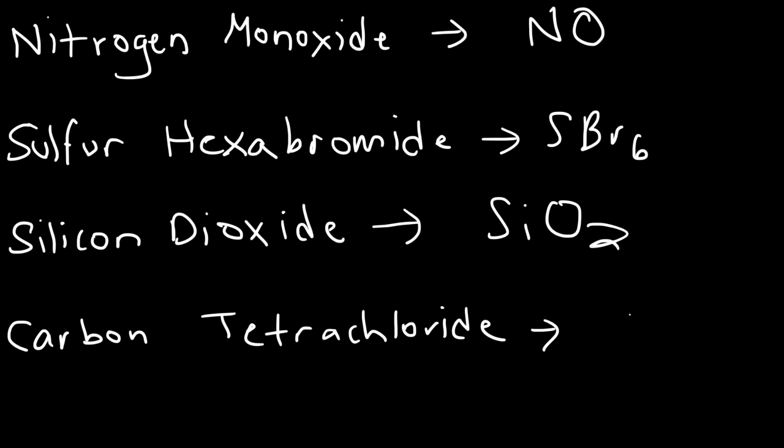And then carbon tetrachloride. So we have a carbon, which is the letter C. Tetra is four, so CCl4. And so that's it. So now you know how to write the chemical formulas of covalent compounds. Thank you.